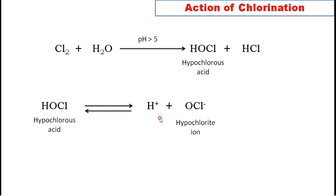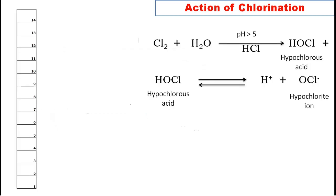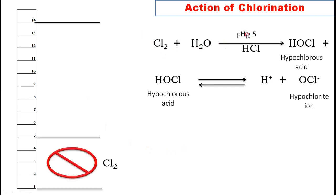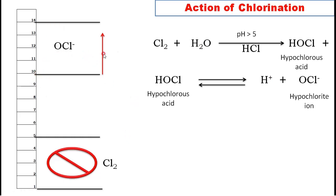pH values range from 1 to 14. The chlorination action only occurs when pH is greater than 5 — below that you will not see any chlorination action. If you add chlorine to water with pH less than 5, the chlorine will just stay in the water as chlorine and won't react with any compounds. If the pH is more than 10, all HOCl dissociates and becomes H⁺ and OCl⁻ ions.